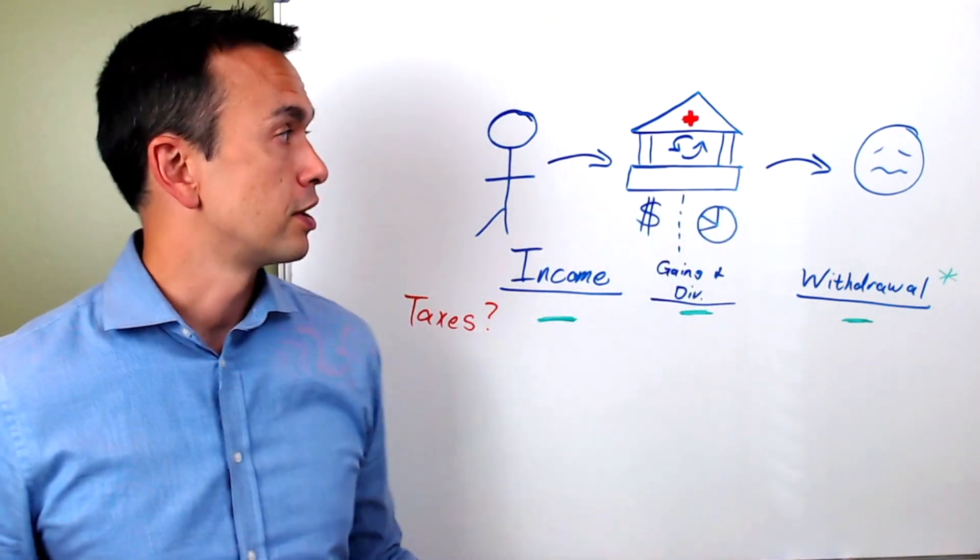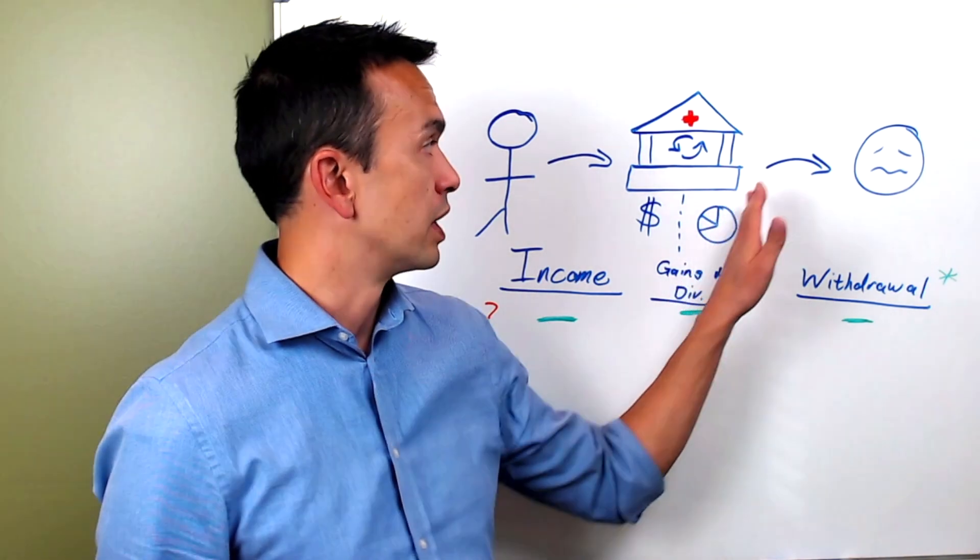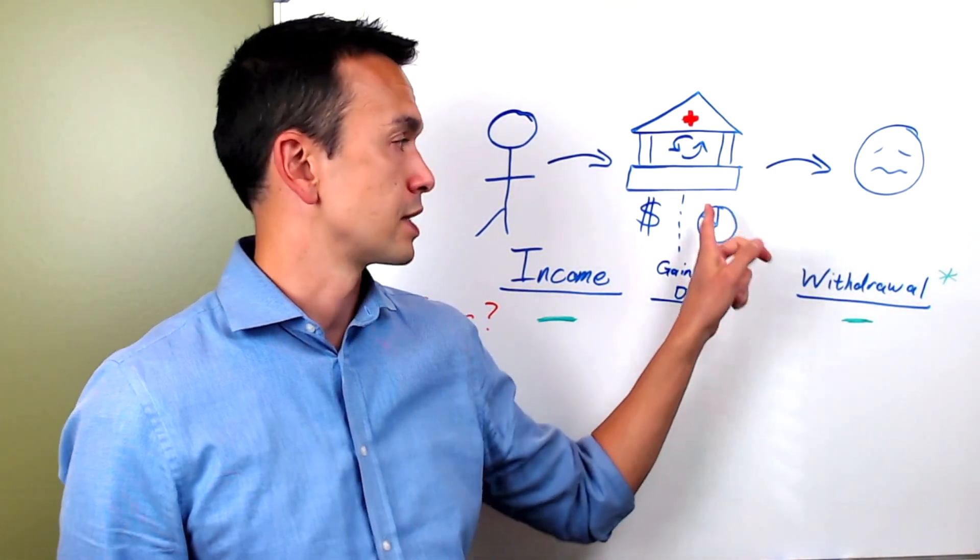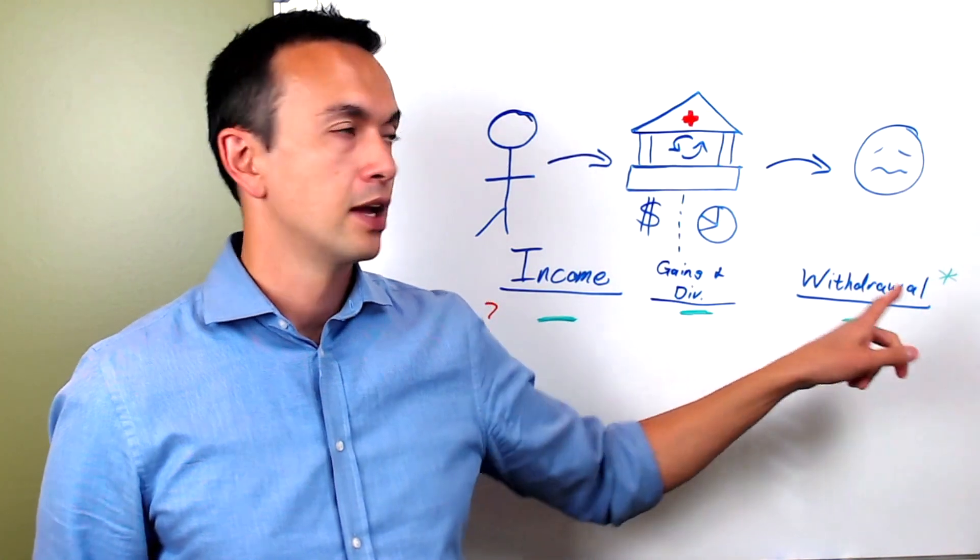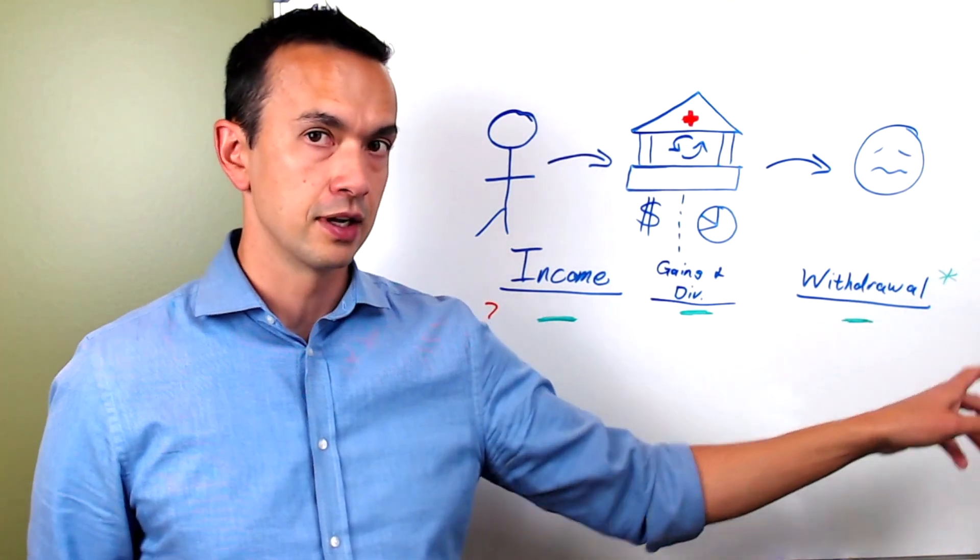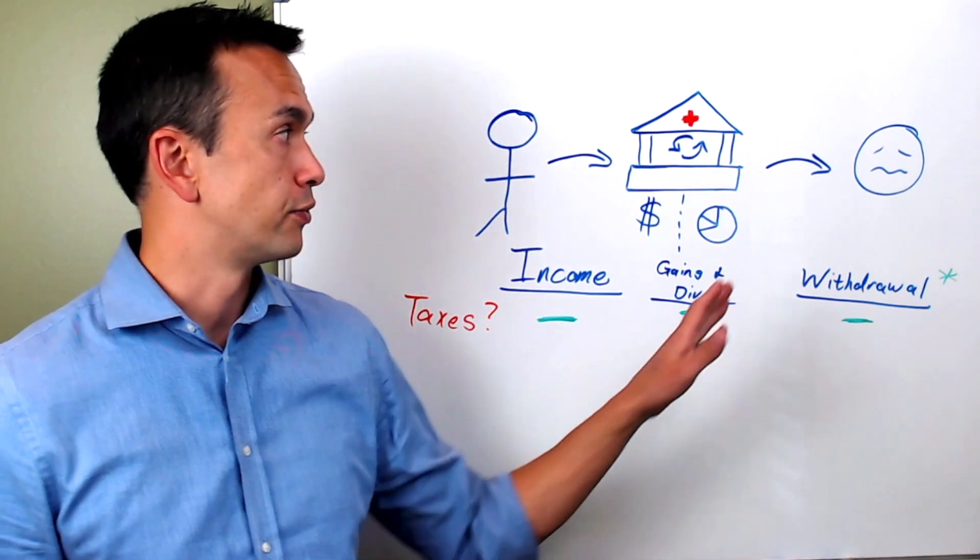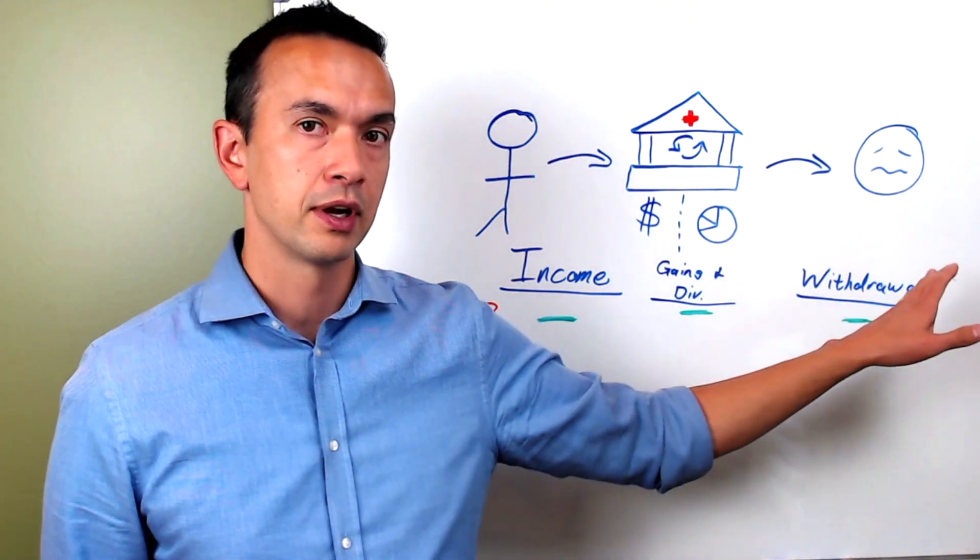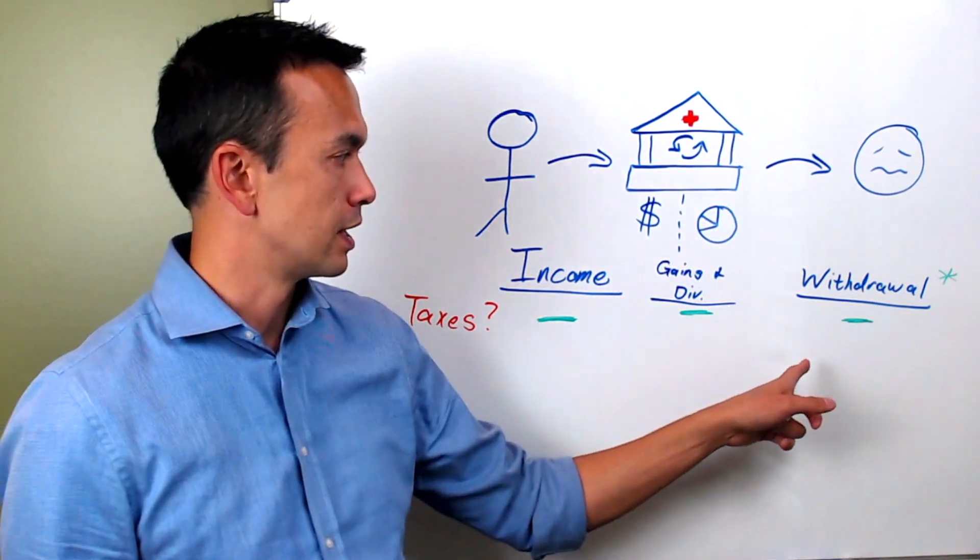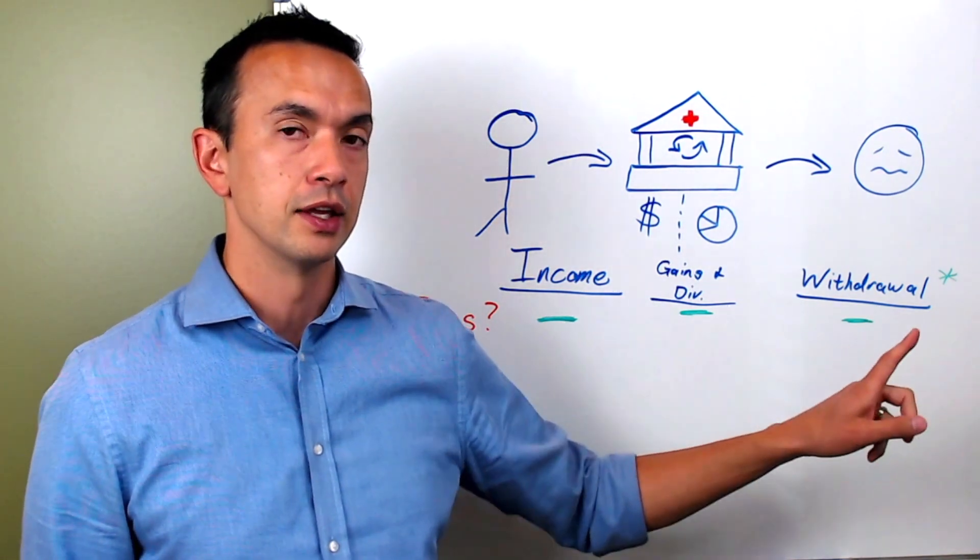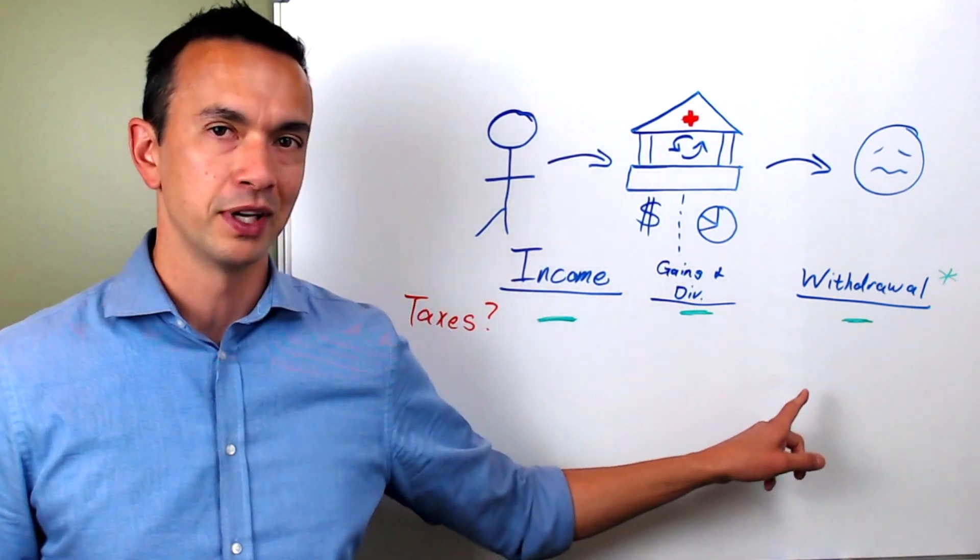We've already talked about that if you withdraw money from this account and use it for qualified medical expenses, then there's no taxes on it. But if you withdraw money for non-qualified expenses, then the way that it's treated is that it's going to be taxed and then you will also get a 20% penalty.